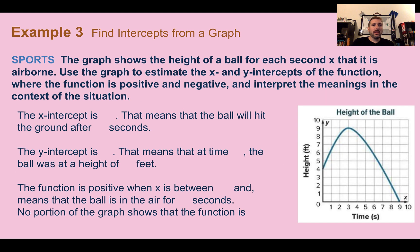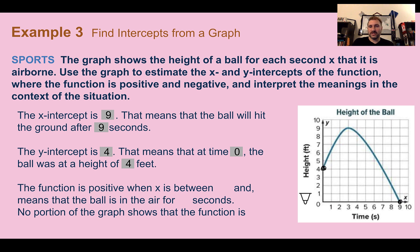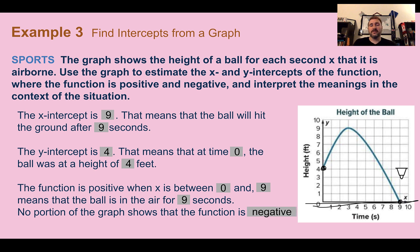Example 3: Find intercepts from a graph in a real context. The graph shows the height of a ball for each second x that it's airborne. The x-intercept is at 9, meaning the ball hits the ground at 9 seconds. The y-intercept is at 4, meaning at time zero the ball was at a height of 4 feet. The function is positive between 0 and 9 seconds; no portion of the graph is negative.